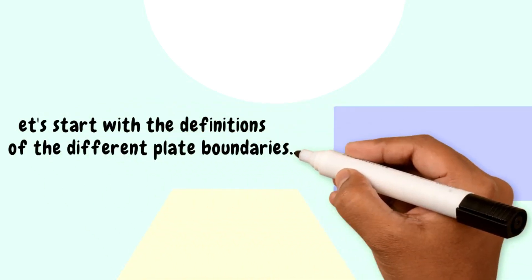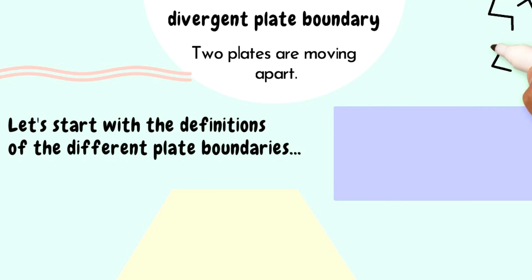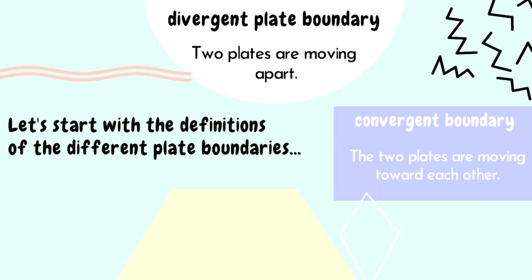Let's start with the definitions of the different plate boundaries. In divergent plate boundary, the two plates are moving apart. While in convergent boundary, the two plates are moving toward each other.